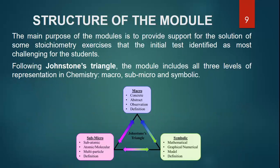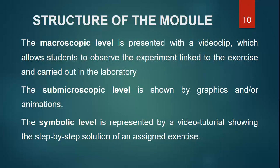The main purpose of the modules is to provide support for the solution of some stoichiometric exercises that the initial test identified as most challenging for the students. Following Johnston's model, which since 1991 underlined how the learning of chemical concepts requires the interlinked knowledge of the relationships between the three aspects, each module includes all three levels of representation in chemistry. The macroscopic level is presented with a video clip allowing students to observe the experiment linked to the exercise and carried out in the laboratory, often supplied by graphics or animation showing its submicroscopic level. The symbolic level is represented by a video tutorial showing the step-by-step solution of an assigned exercise.